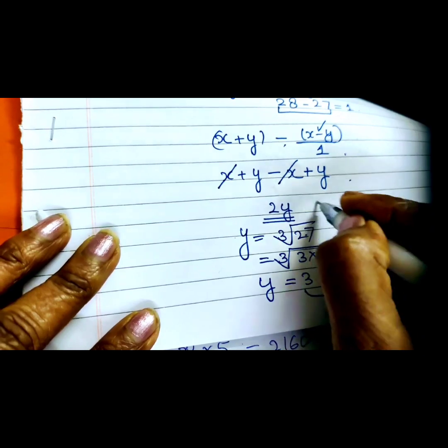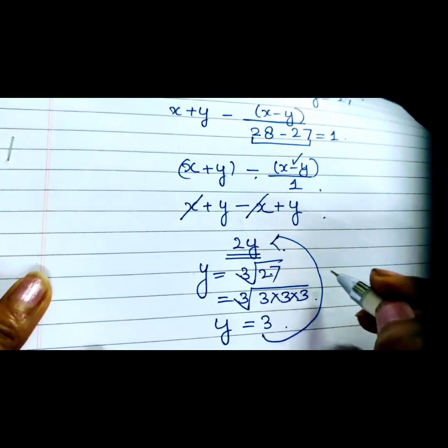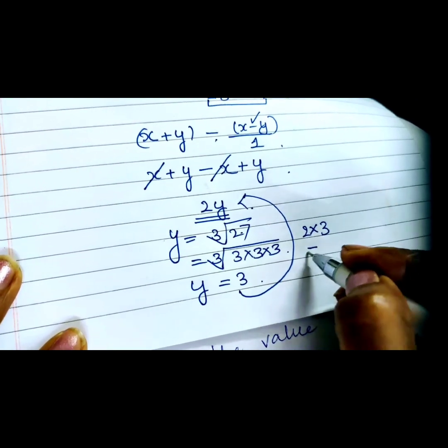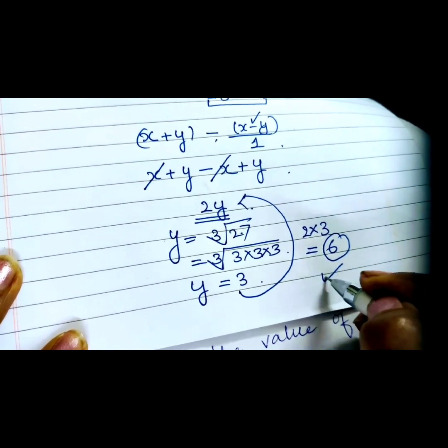Put this value in 2y, so this will be 2y = 2 × 3 = 6. This is our final answer.